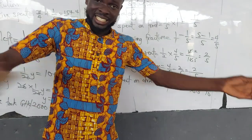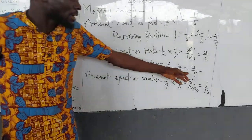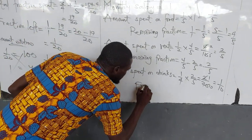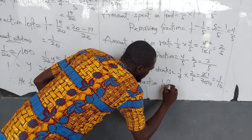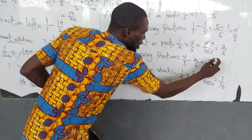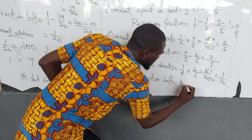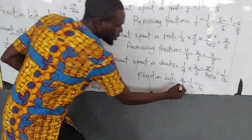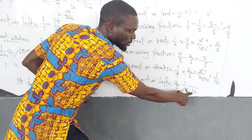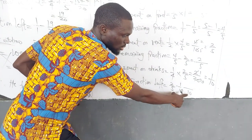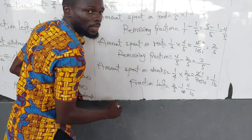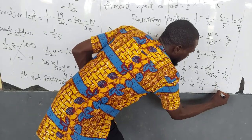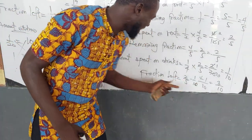So I have to calculate my fraction left. I am left with two over five, and I have spent one over ten from it. So fraction left equals two over five minus one over ten. The LCM is 10. Five goes into 10 two times; two times two is four. Ten goes into 10 once; one times one is one. So four minus one gives three over ten. This three over ten is the fraction left.